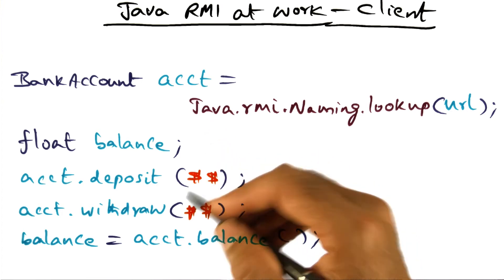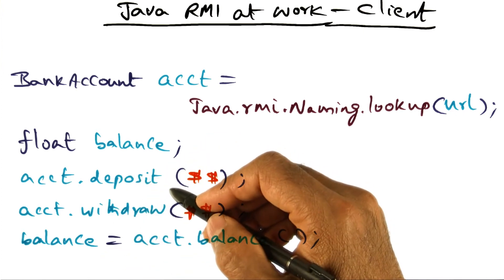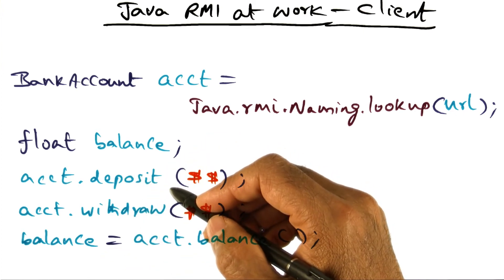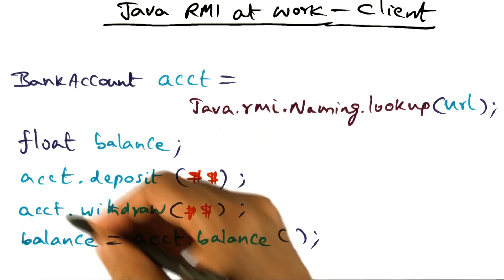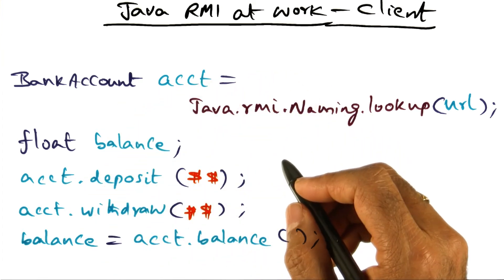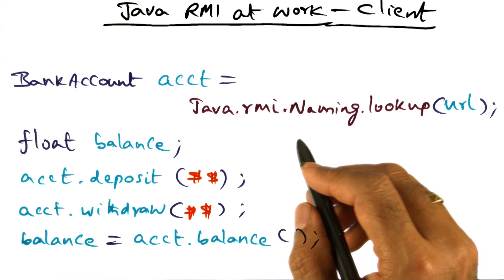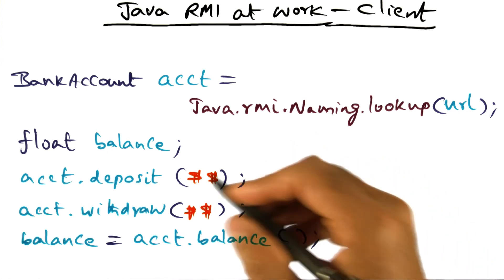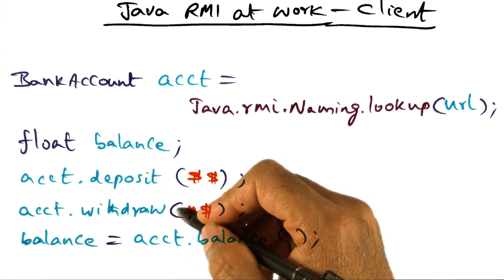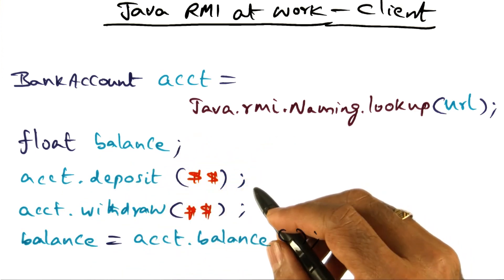If there are failures in any of these function executions, remote exceptions will be thrown by the server through the Java runtime system back to the client. With the networked nature of this client-server relationship, if a remote exception is thrown and the client sees that the invocation did not succeed,